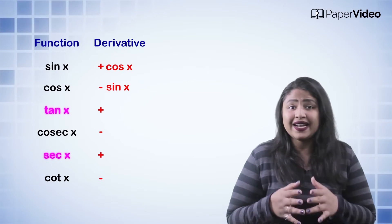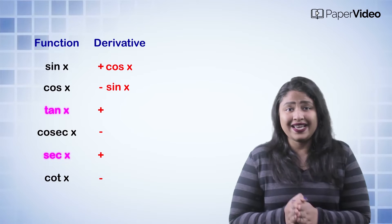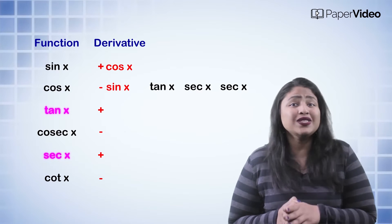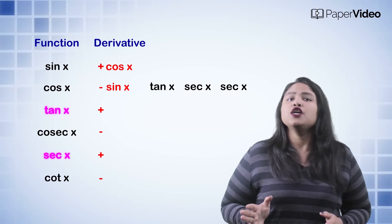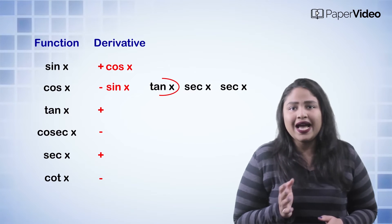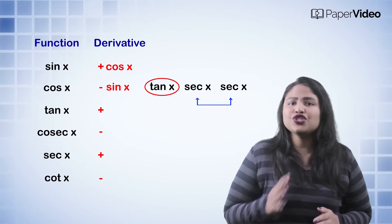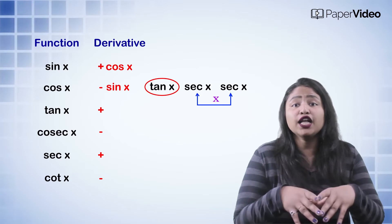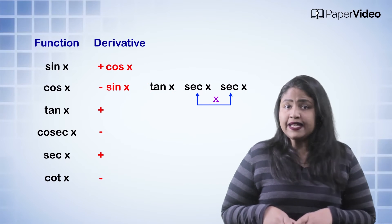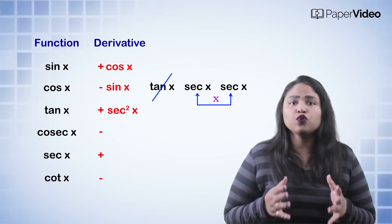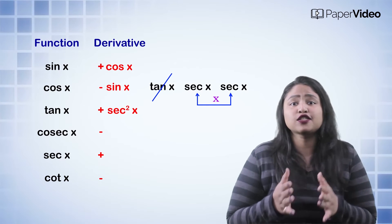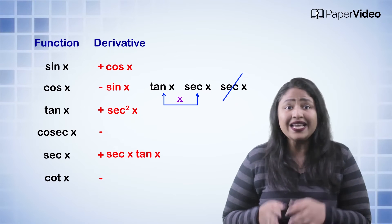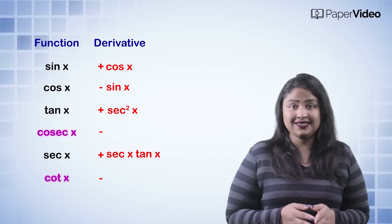Consider the first pair, that is tan x and sec x. Take one tan x and two sec x like this. To find the derivative of tan x or sec x, just remove that function and multiply the other two functions. This means that the derivative of tan x would be sec squared x, and the derivative of sec x would be sec x tan x.